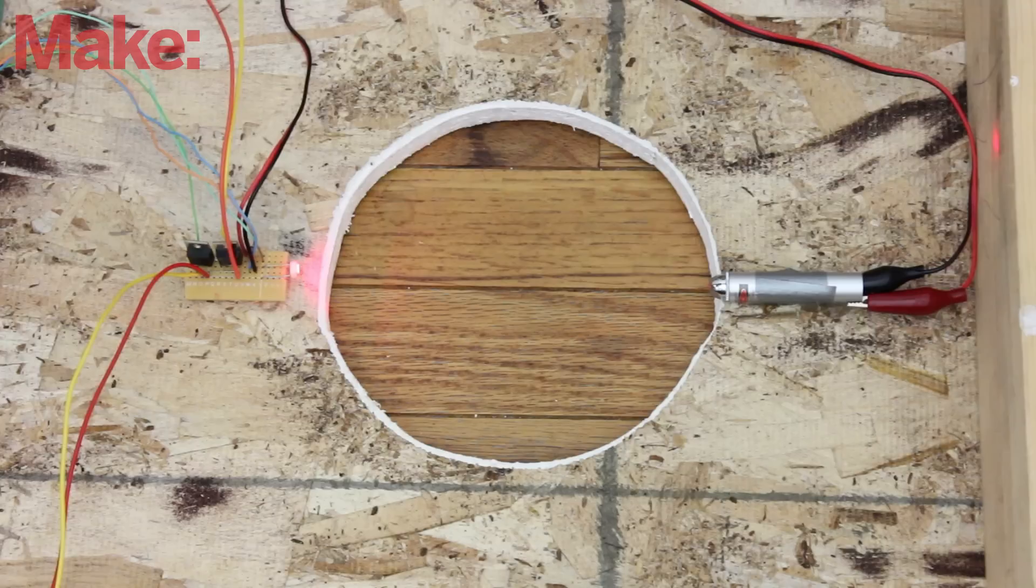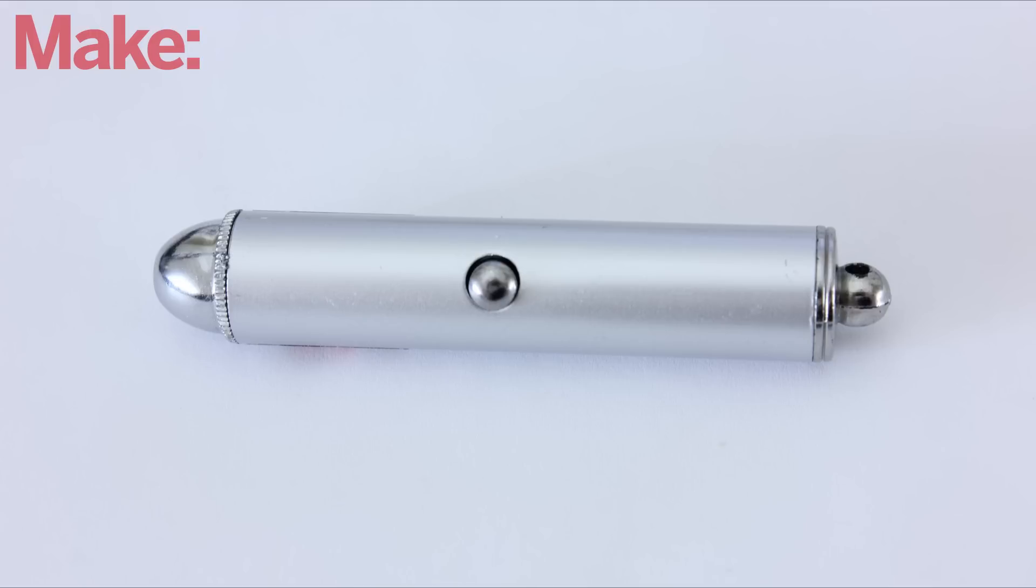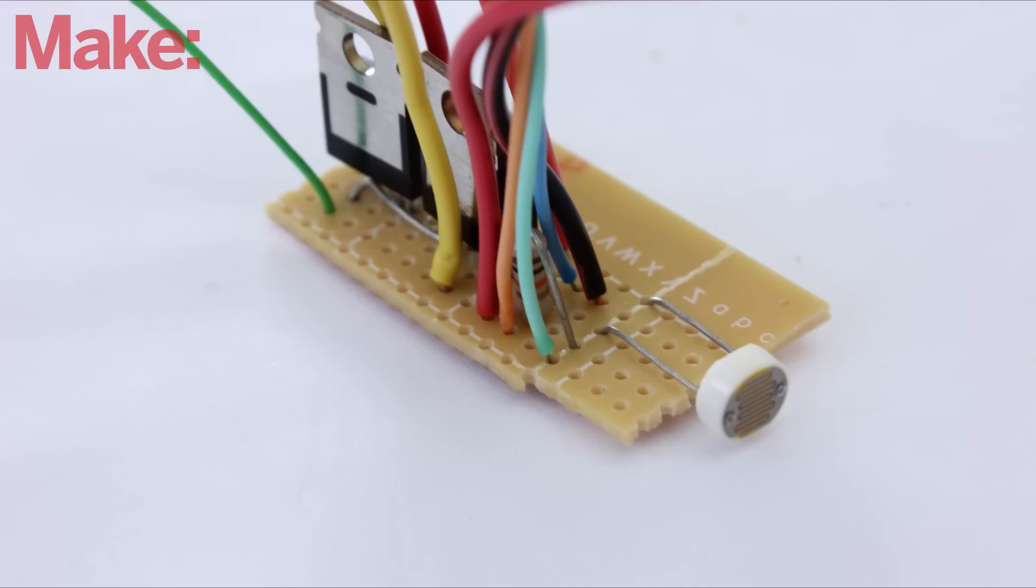To detect when someone scores, I'm using a basic light sensing circuit. A laser pointer is set up on one side of the hole, and the light detector is set up on the other.